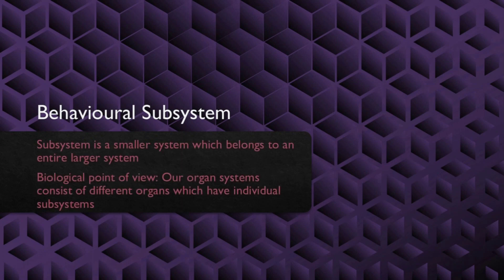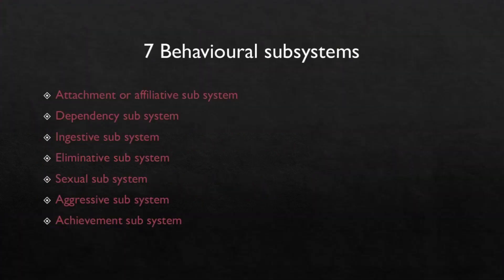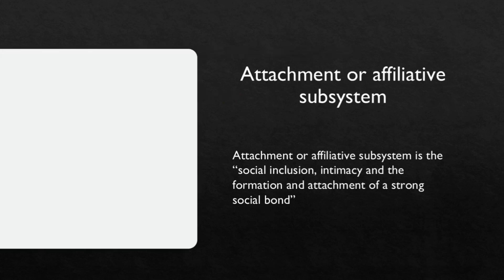A subsystem is a smaller system which belongs to an entire larger system. From the biological point of view, our organ systems consist of different organs which have individual subsystems. From the behavioral point of view, our behavioral system is constituted of many smaller subsystems. There are seven subsystems: attachment or affiliative, dependency, ingestive, eliminative, sexual, aggressive, and achievement.